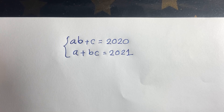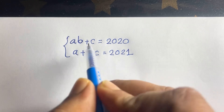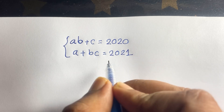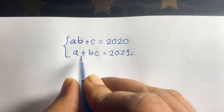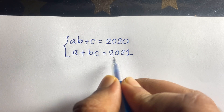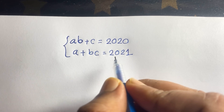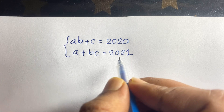Hello everyone. In this video we have solved this interesting math olympiad question. Here, ab + c is equal to 2020, and a + bc is equal to 2021. We find out what is the value of a, b, and c in this math olympiad question.